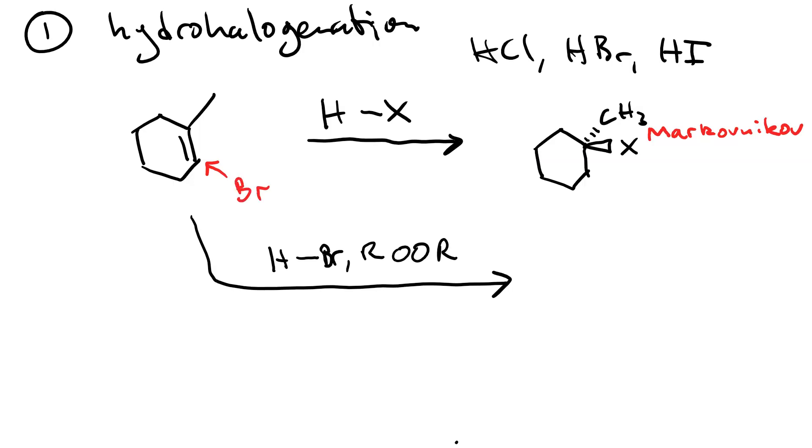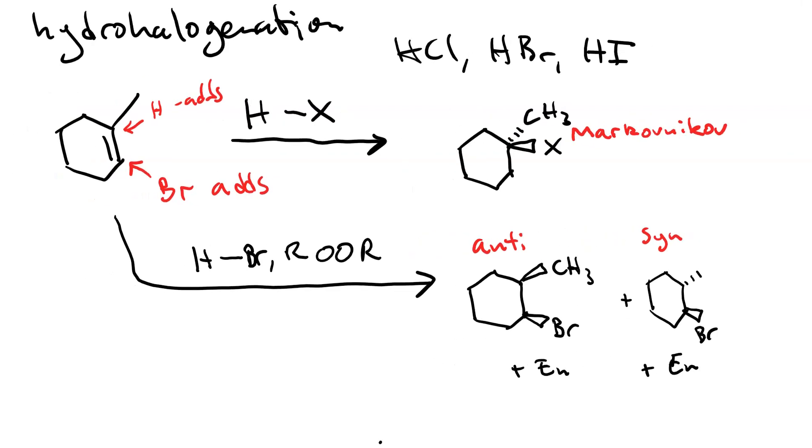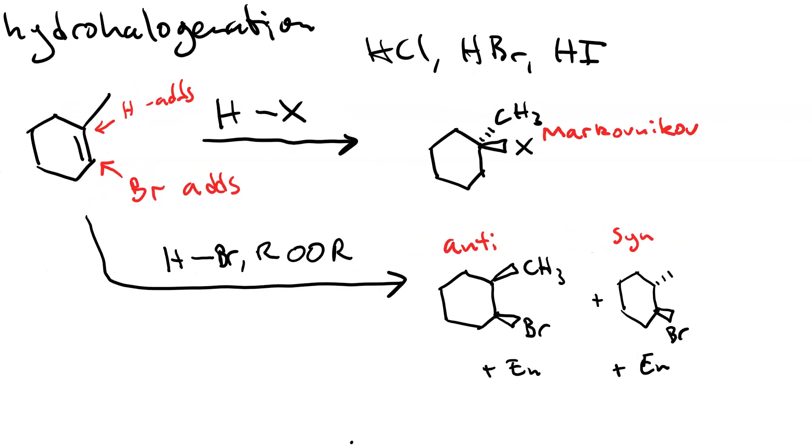Regiochemically, the bromine adds to the less substituted position, and the hydrogen adds to the more. Now because we go through radical intermediates, there are no stereochemical preferences. This gives us a plethora of stereochemical outcomes. In other words, you get both the anti-product and the syn-product and their enantiomers. So that's four different stereochemical outcomes. The regiochemistry, however, is anti-Markovnikov.